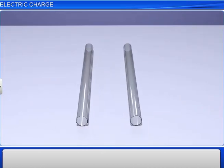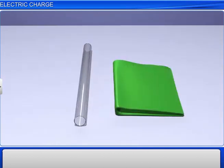Now, if one of the silk cloths and a glass rod are kept beside each other, they attract each other.